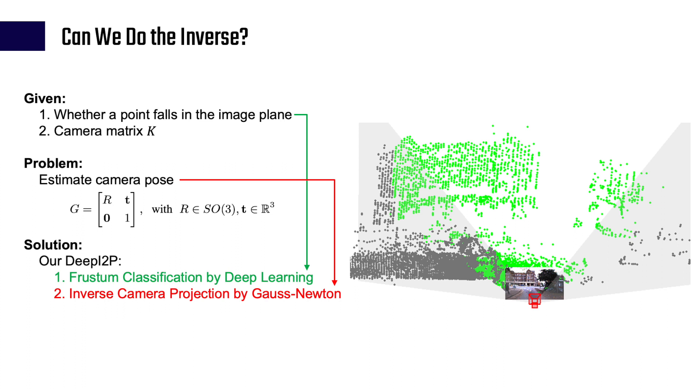First, given the point cloud and RGB image, how can we know whether a 3D point falls in the image plane or not? To solve it, we propose Frustum classification using a deep network.